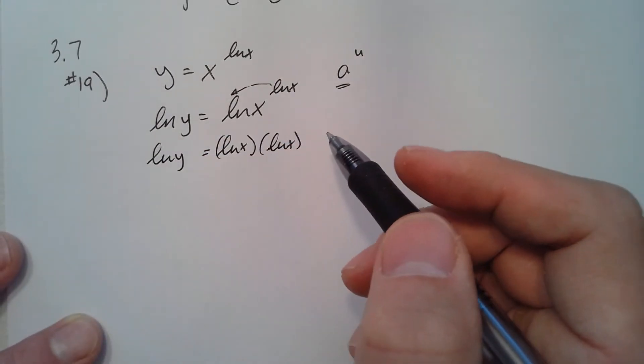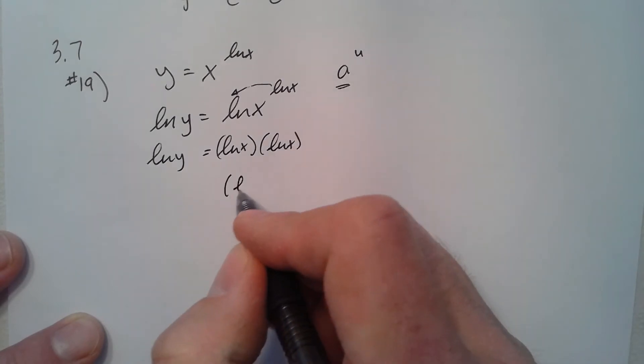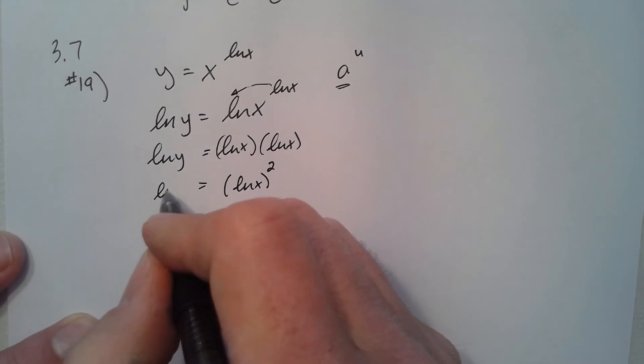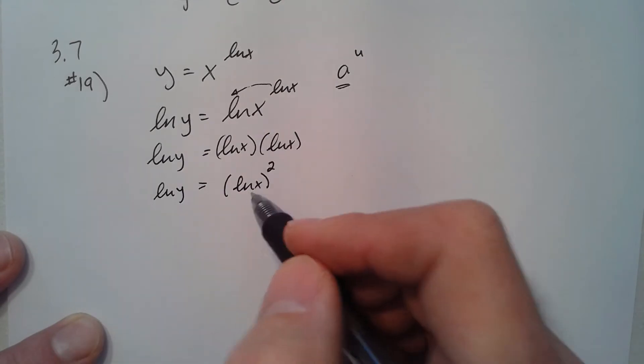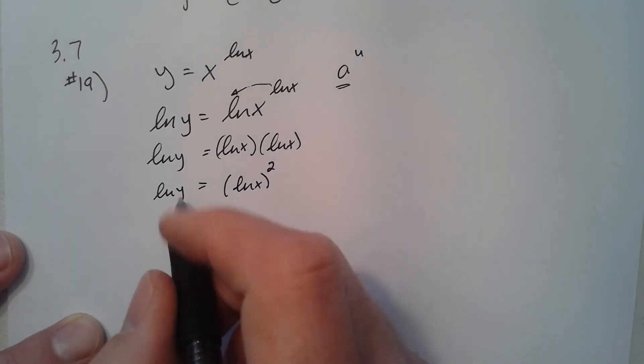So we can do the derivative as it is here, we can use product rule on the right side. I think I'm going to write natural log of x quantity squared, maybe use chain rule instead of the product rule.